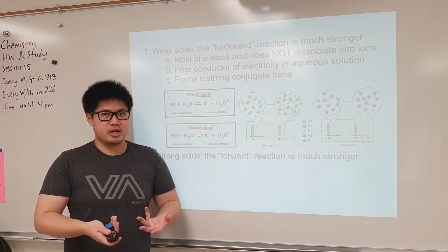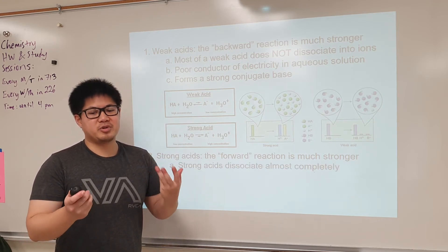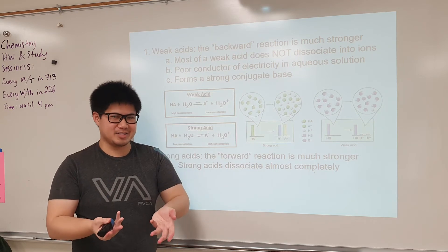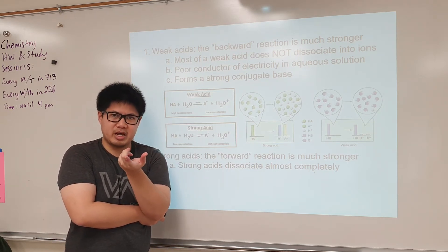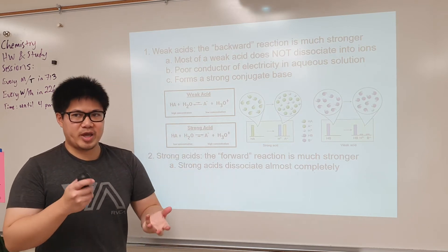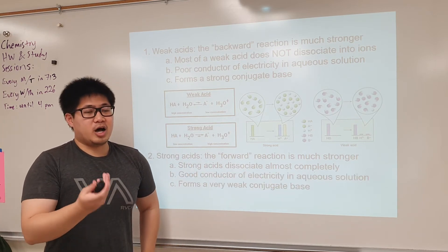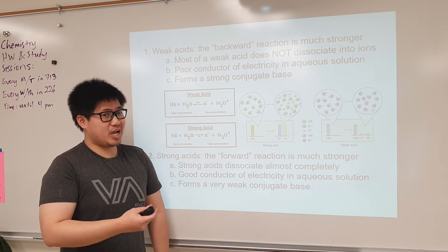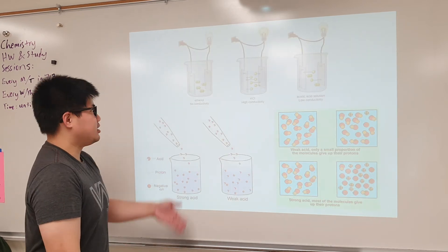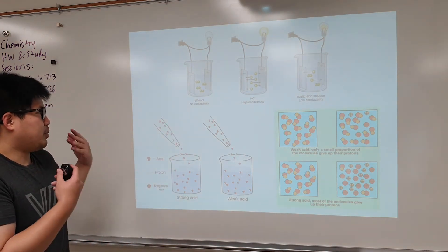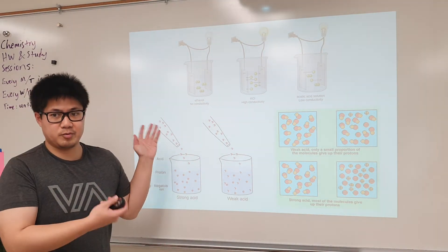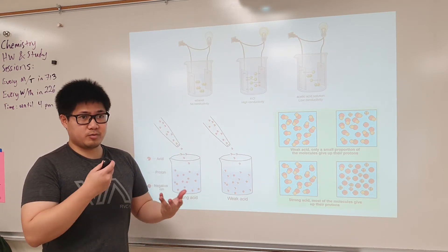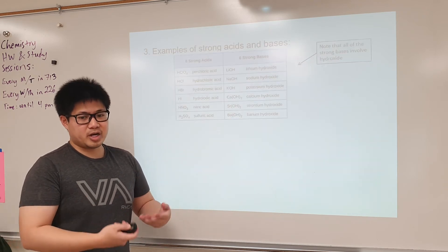If we're dealing with a strong acid, it would dissociate very strongly. It would completely or almost completely dissociate in an aqueous solution. If we favor the forward reaction, we have a strong acid, but if we have a strong acid, we should probably end up with a weak conjugate base. If it's strong here, it should be weak over here. Strong acids are very good conductors. That light would shine very brightly compared to a weak acid.